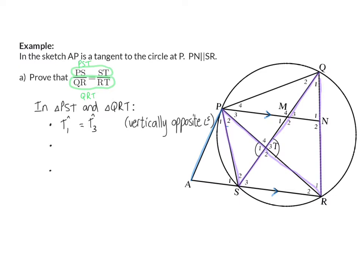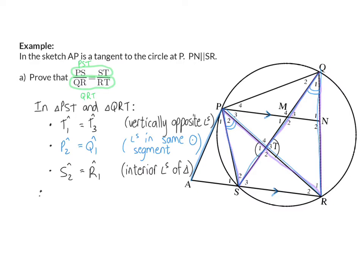Next, we can say that angle P2 is equal to angle Q1 because they are both formed from the same arc SR. So P2 will be equal to Q1, and the reason is angles in the same circle segment. For my third pair of angles, we can say that S2 is equal to R1, or we can use interior angles of a triangle because the angles still need to add up to 180 degrees.